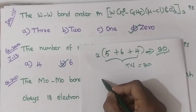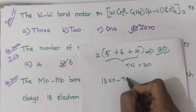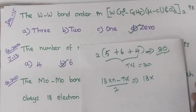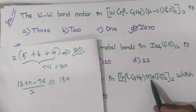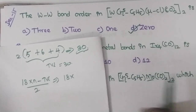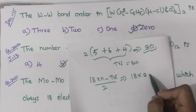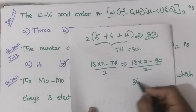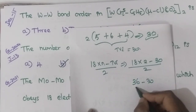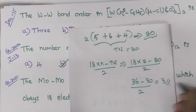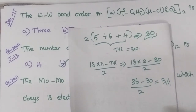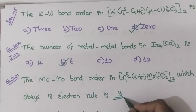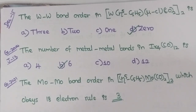Now apply the formula: (18 × N − TVE) / 2. The number of metal atoms is 2 (molybdenum twice). So: (18 × 2 − 30) / 2 = (36 − 30) / 2 = 6 / 2 = 3. The Mo–Mo bond order in this complex is 3.